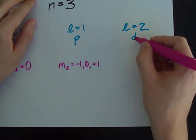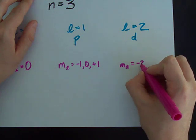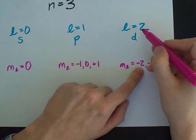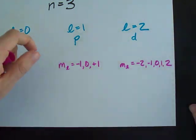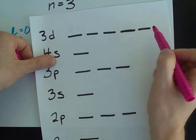And a D means ML can be negative two, negative one, zero, one, or two. All the way from minus L to plus L. So, each D orbital gets five dashes.